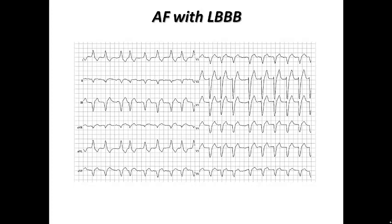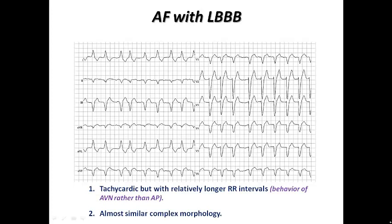Why do we say this? Because the tachycardia has relatively longer RR intervals — a behavior of the AV node rather than an accessory pathway — and the complex morphology is nearly the same throughout. So here we don't have pre-excited AF; we have AF with left bundle branch block.